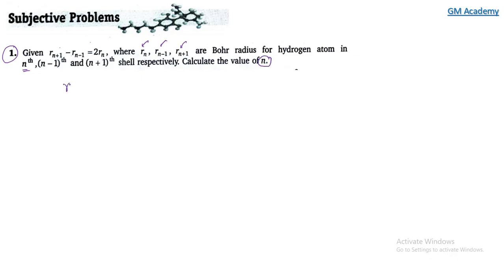We have the radius of nth orbit as 0.529 × n² / z. We put this expression into the equation r(n+1) minus r(n-1) equal to 2r(n).